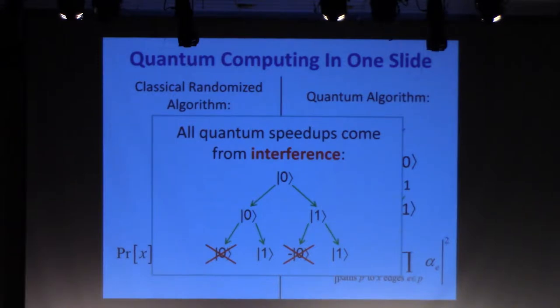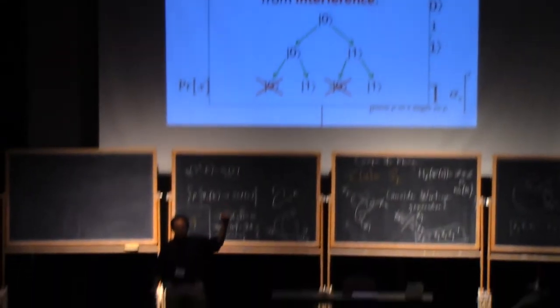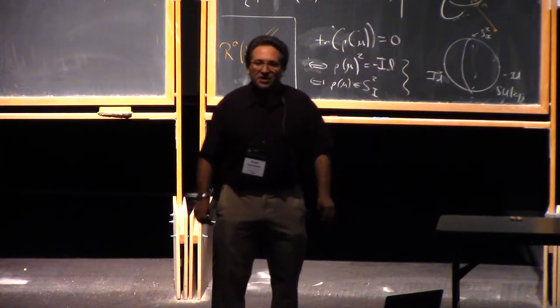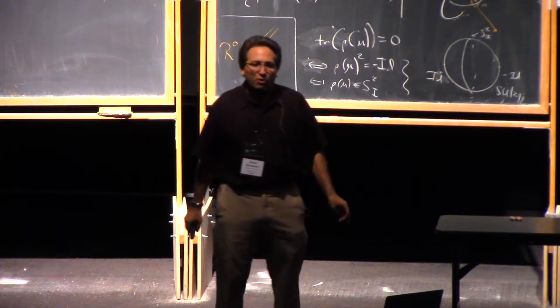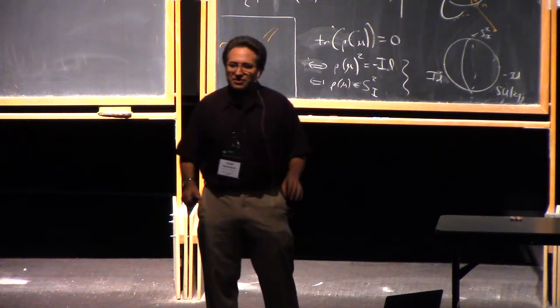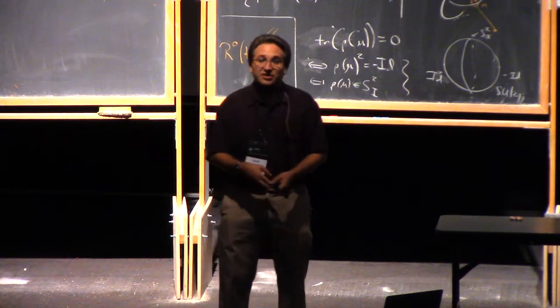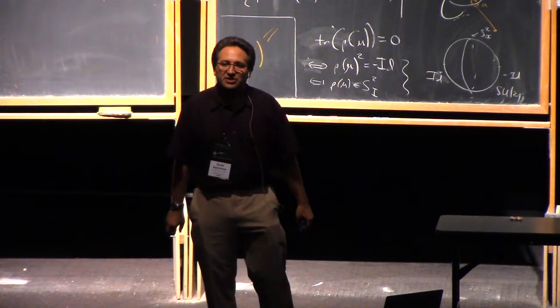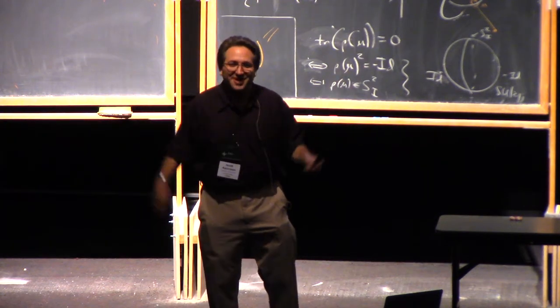The goal with every quantum algorithm is to choreograph things so that for each wrong answer, you get destructive interference among all of the paths leading to that answer. Whereas only for the right answer do you want constructive interference, which means all of the paths leading there have amplitudes with roughly the same phase. The hard part of quantum algorithm design is that you have to choreograph that pattern of constructive and destructive interference. You've got to do it efficiently with a polynomial number of simple operations, and you've got to do it despite not knowing in advance which answer is the right one, which would trivialize the exercise.